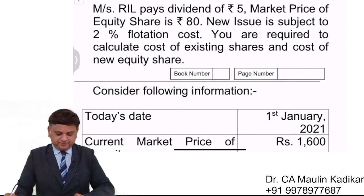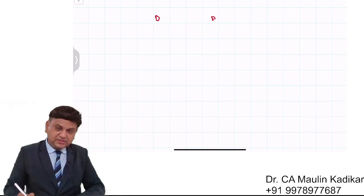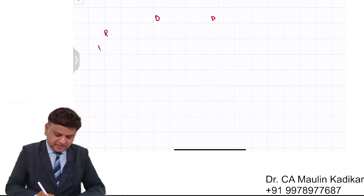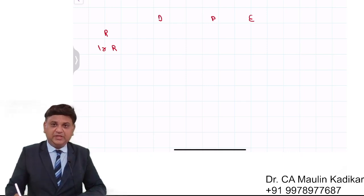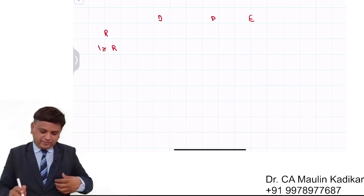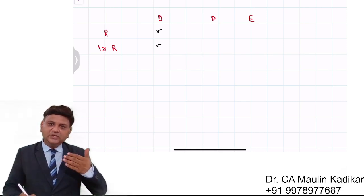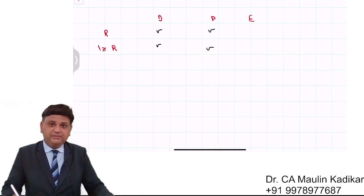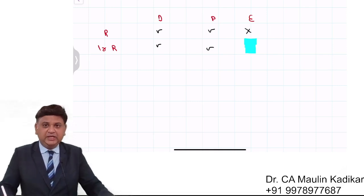Let us understand a point before we proceed to the next question. In case of debentures and preference shares, we have the concept of redeemable and irredeemable — two types of securities. But in case of equity shares, we have only irredeemable security. We do not have the concept of redeemable security.